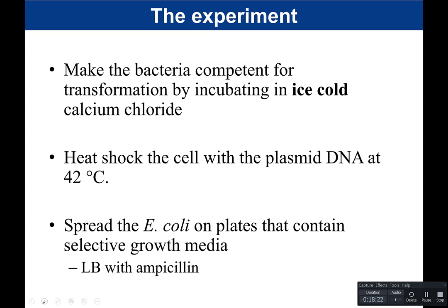In our experiment, we want E. coli to take up our plasmid PBR322. We're using the strain DH5-alpha, which is more sensitive to transformation and therefore more likely for transformation to occur. Even so, the frequency of transformation in nature is extremely low. To address this, we first make bacteria competent — meaning more likely to take up DNA — by treating with ice-cold calcium chloride.